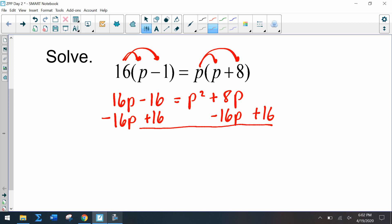So I have zero equals p² - 8p + 16, and now we can factor to use the zero product property. So factors of 16 that add up to negative 8, so we have 4 and 4.